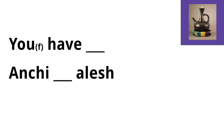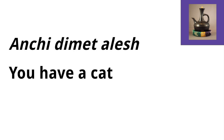For the second person female, 'you have' is 'anchi ailein.' An example using this: 'anchi ailein' — 'you have a cat.' In Amharic, cat is 'ailein,' and we can say 'you have a cat' when speaking to a woman by saying 'anchi ailein.'